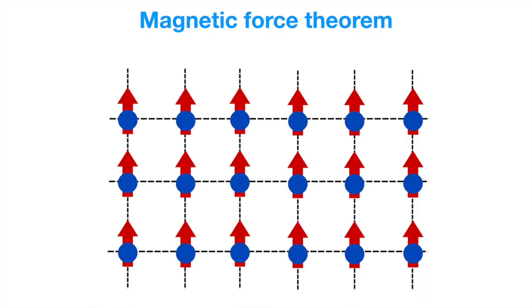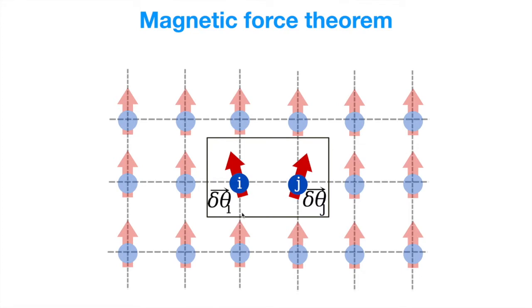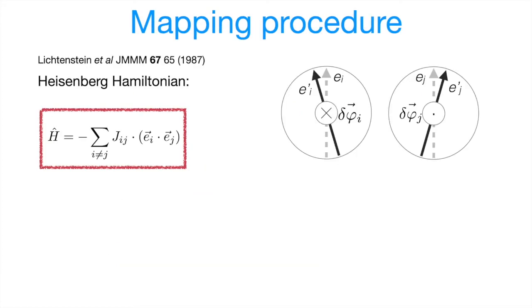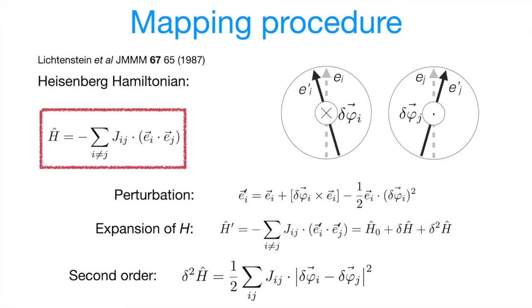So how does it work? Basically, we start from a certain reference state. In this case, we consider ferromagnetic order. We pick up two spins, and we slightly perturb them. And the key procedure here is the mapping. So we perform this perturbation on a level of classical Heisenberg model. This is quite trivial. We have some initial spin directions, and then we add a little perturbation. We expand the rotation up to the second order. So we expand to Hamiltonian, collecting all these terms.